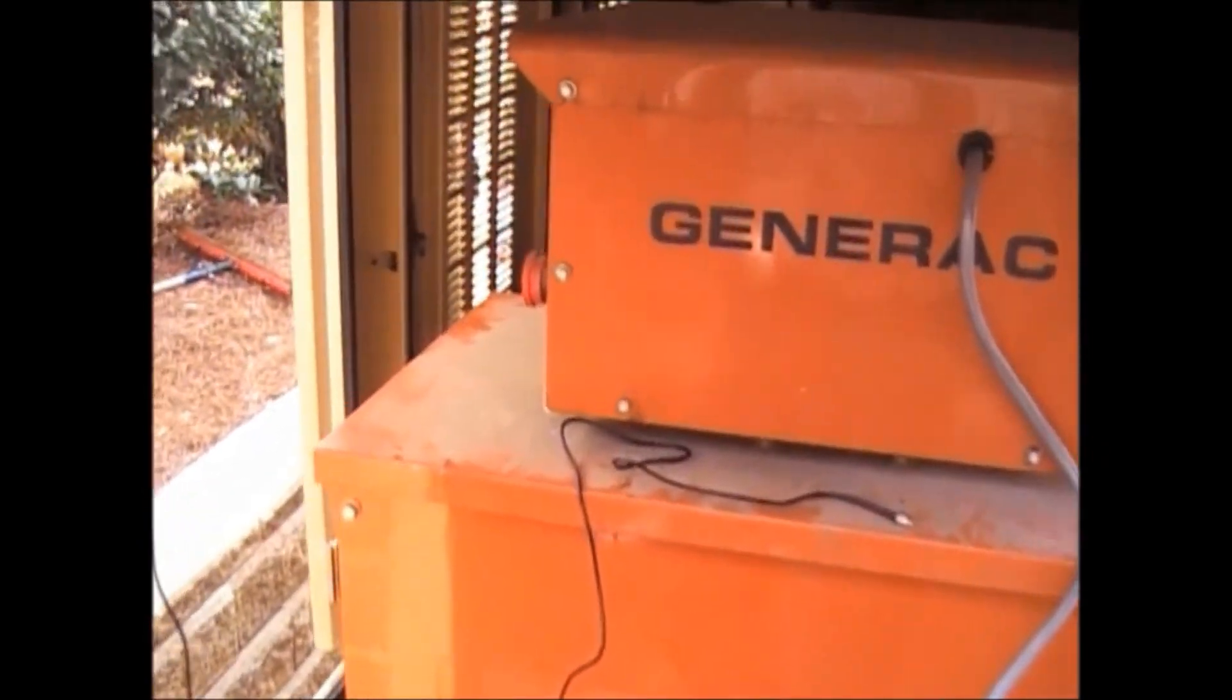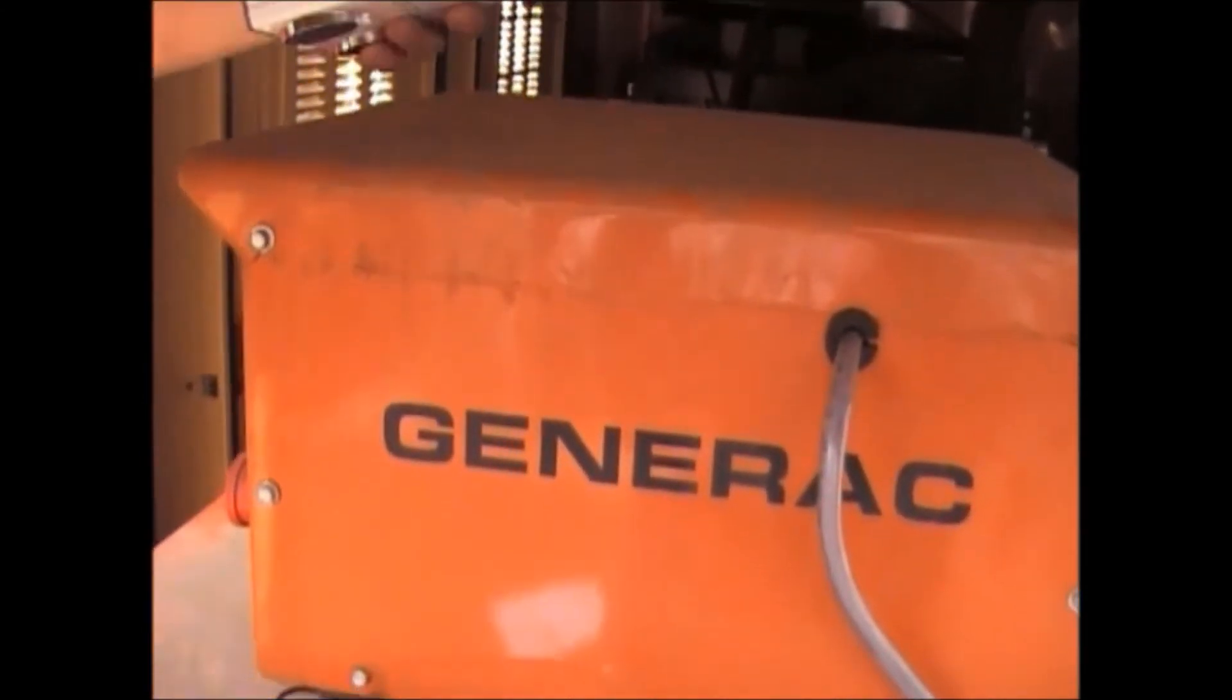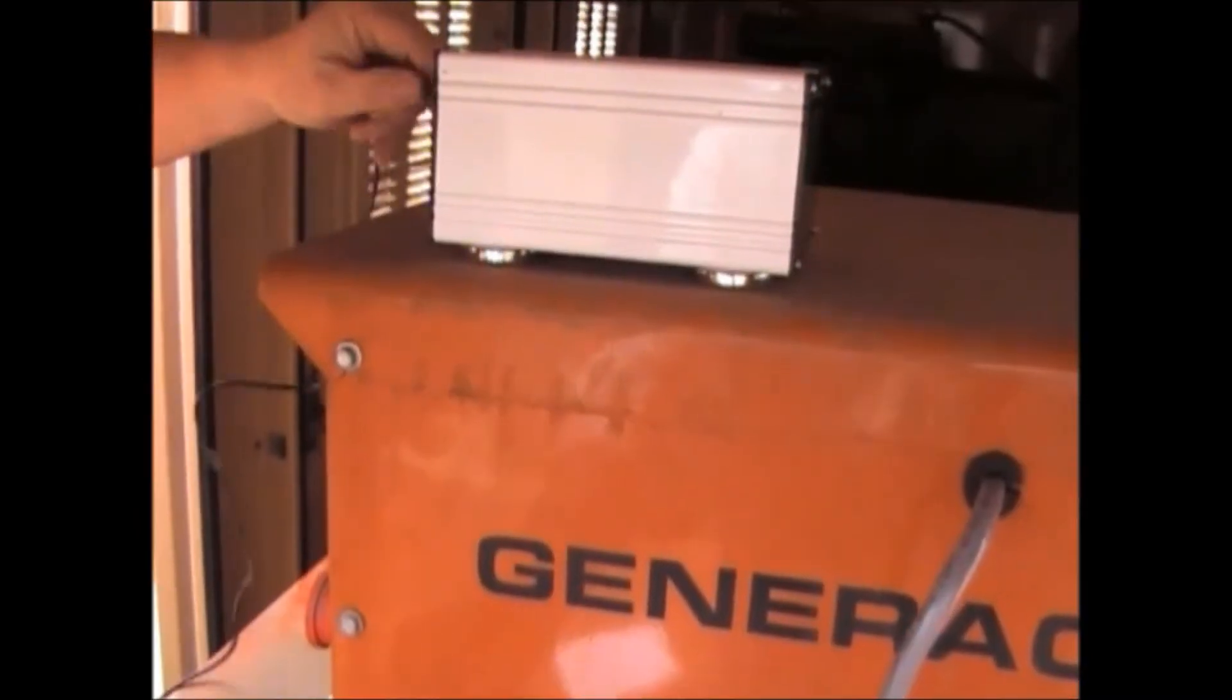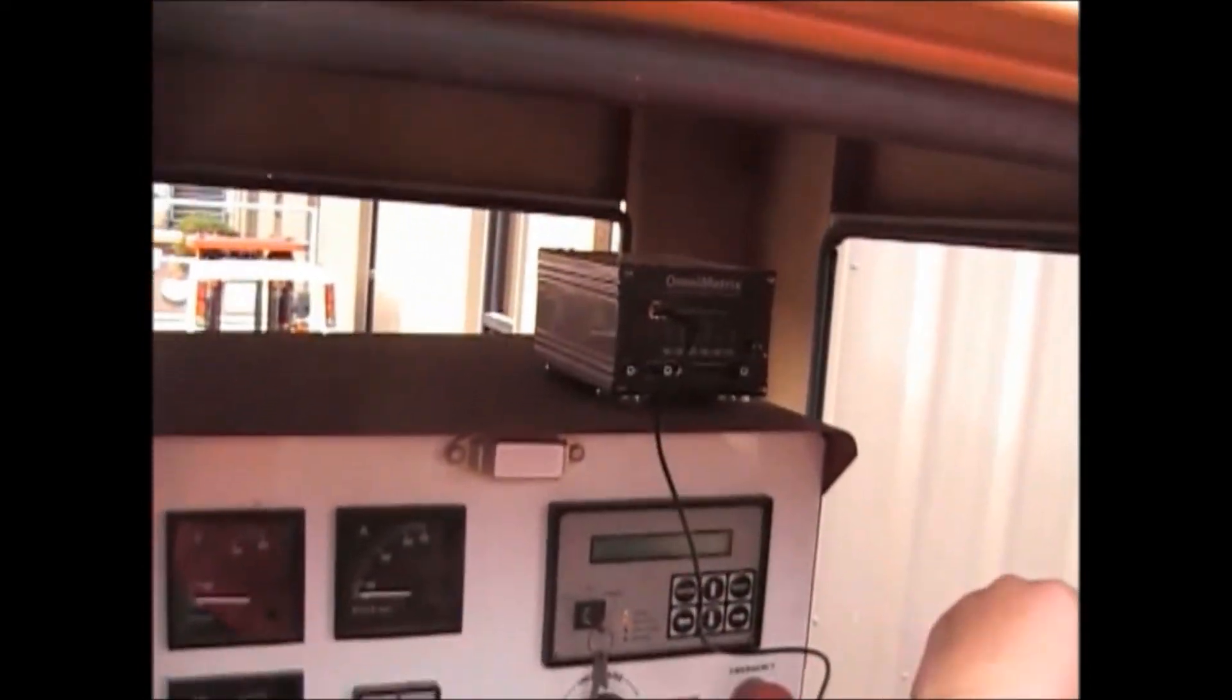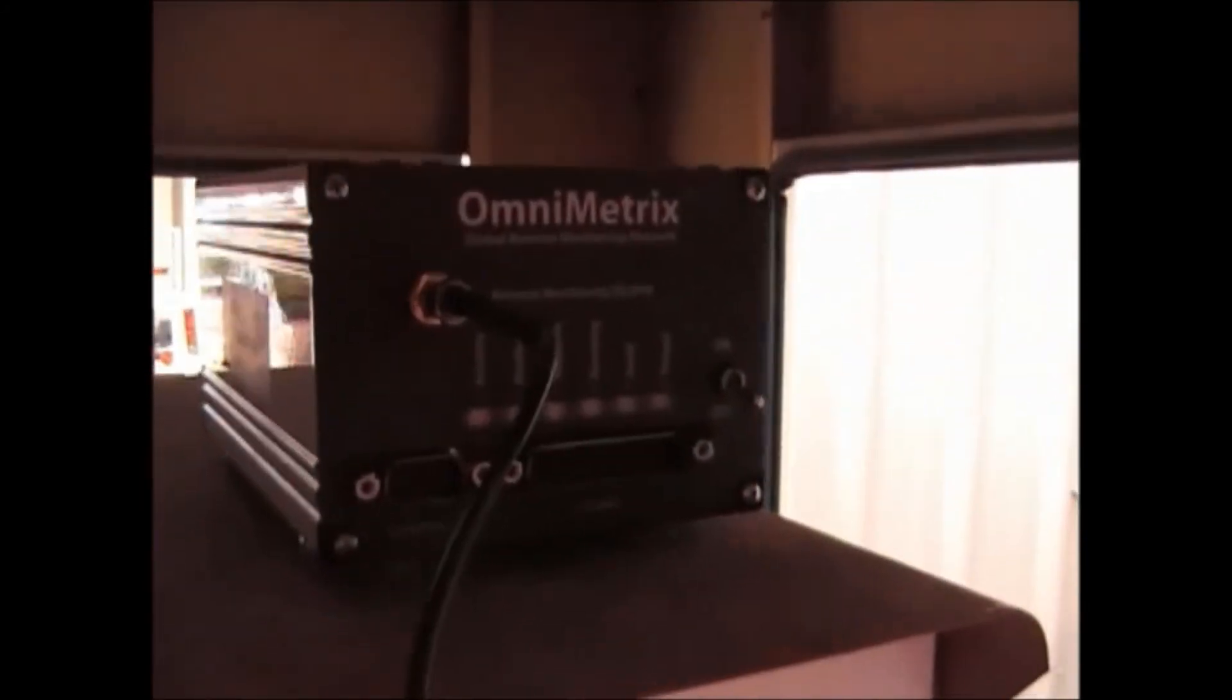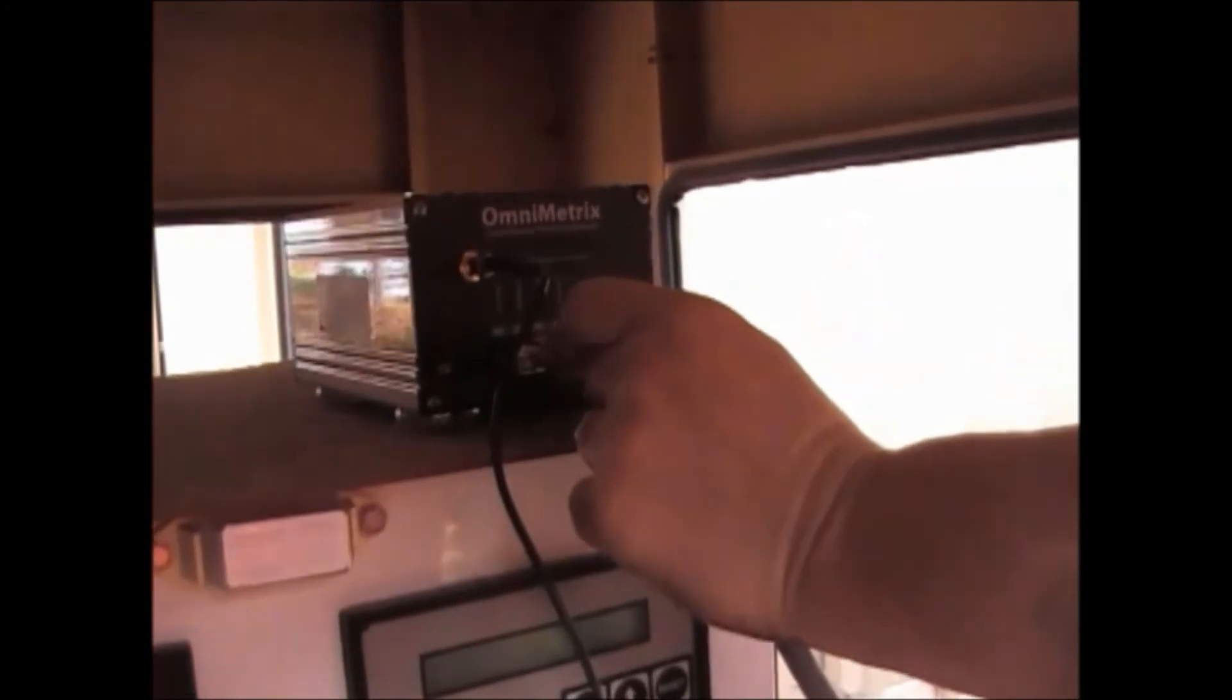So now we're going to add the monitor module. And this we're going to put on the right-hand side of the controller, relatively near the front. Ted has installed the antenna. Let's see if I can get in close enough to see it. Right there. Now the 25-pin connector.